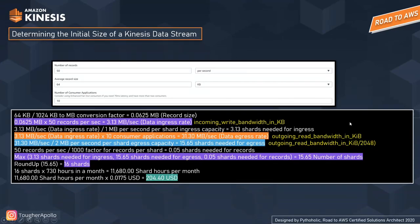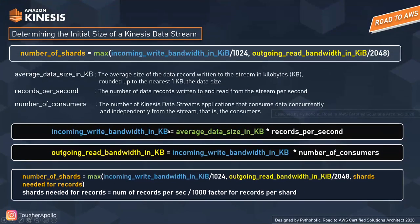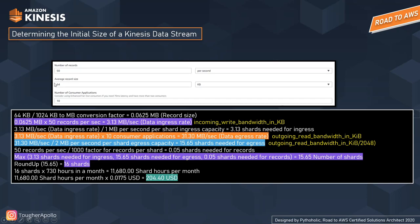Here is a real-time example for determining the initial size of a Kinesis Data Stream, taken from the AWS Price Calculator form. The inputs are: number of records = 50 per second, average record size = 64 KB, and number of consumer applications (Kinesis Data Streams applications) = 10. First, we calculate the incoming write bandwidth — 64 KB divided by 1024 gives 0.0625, which is the record size in MB.